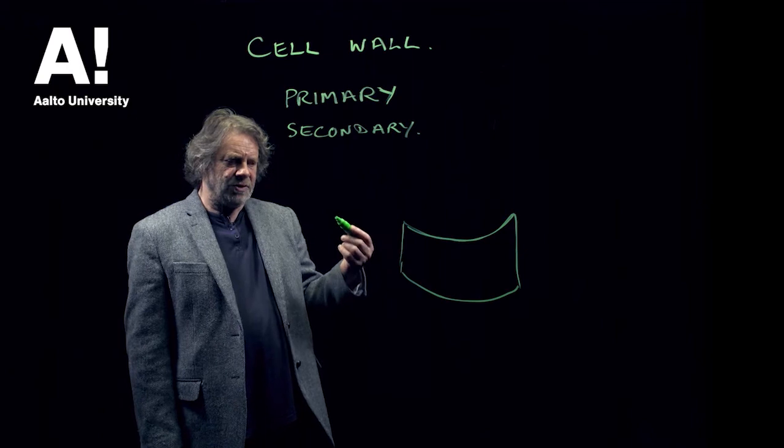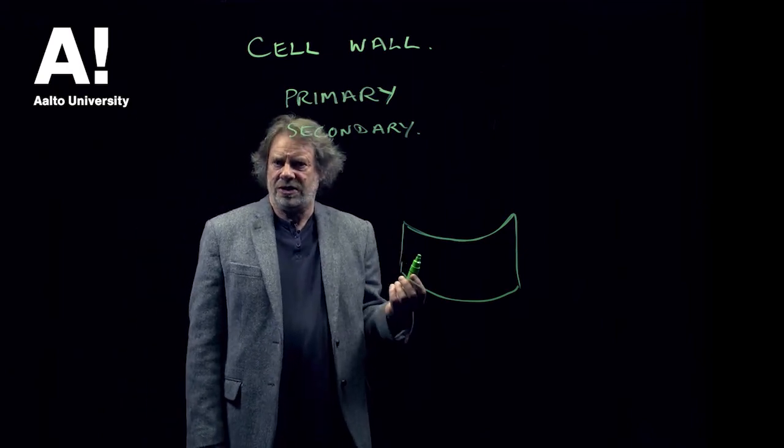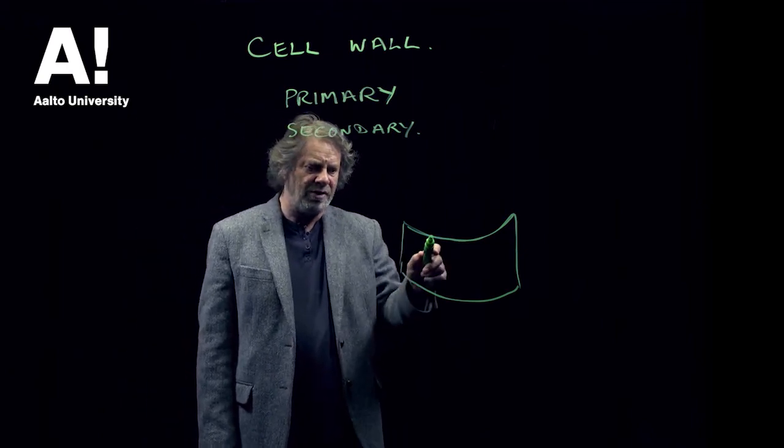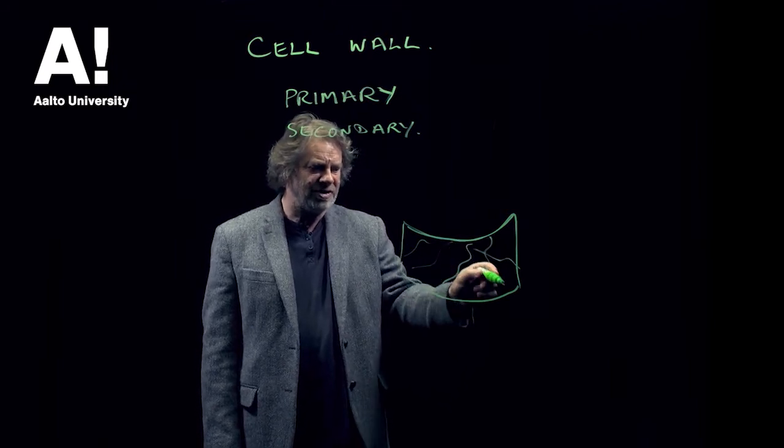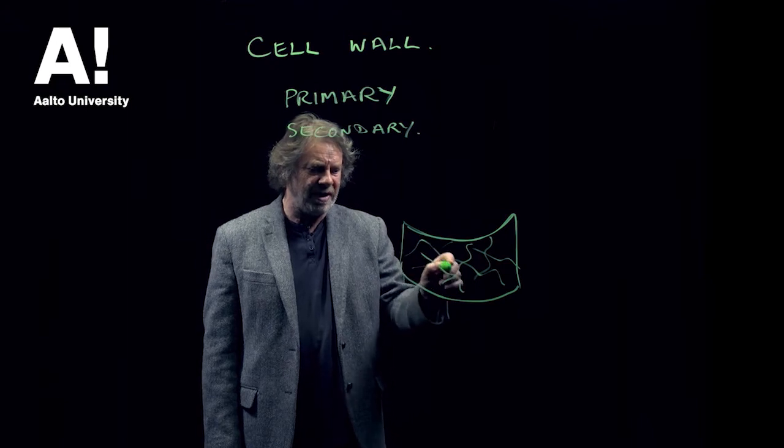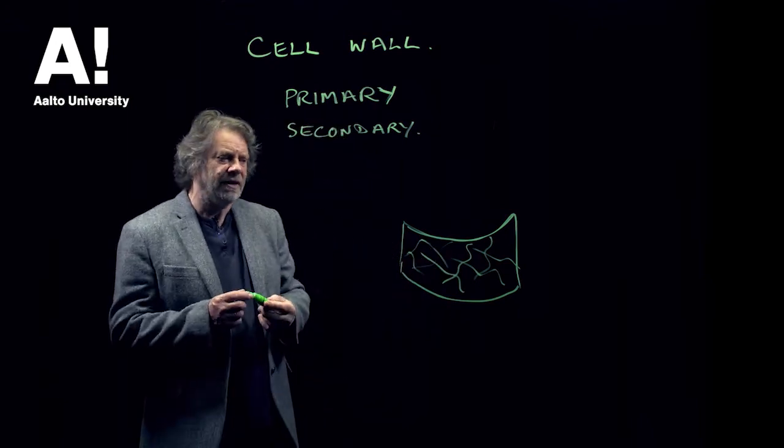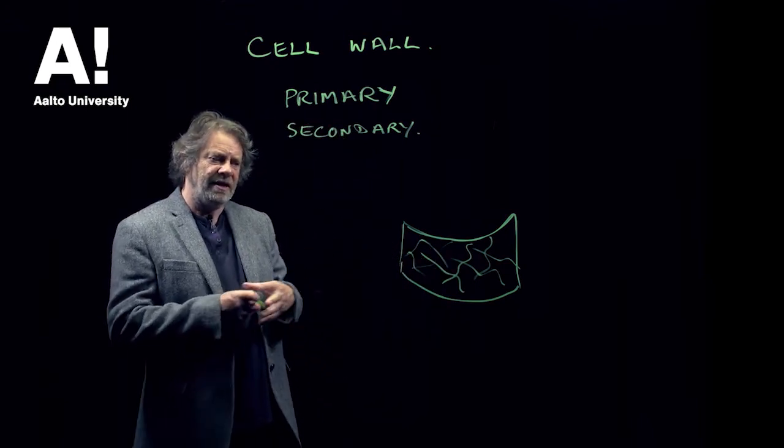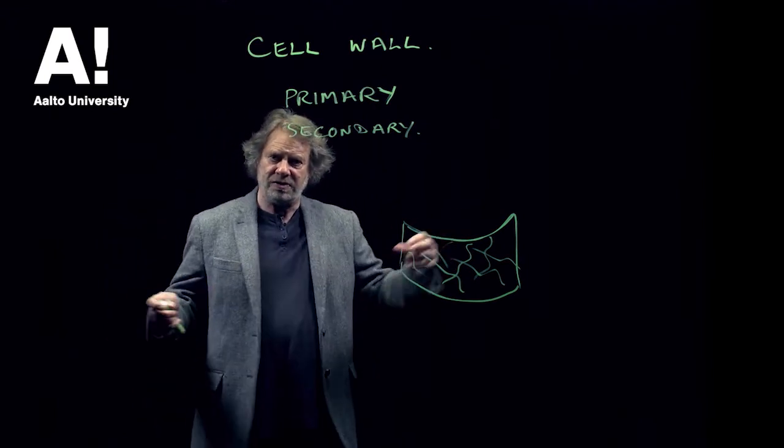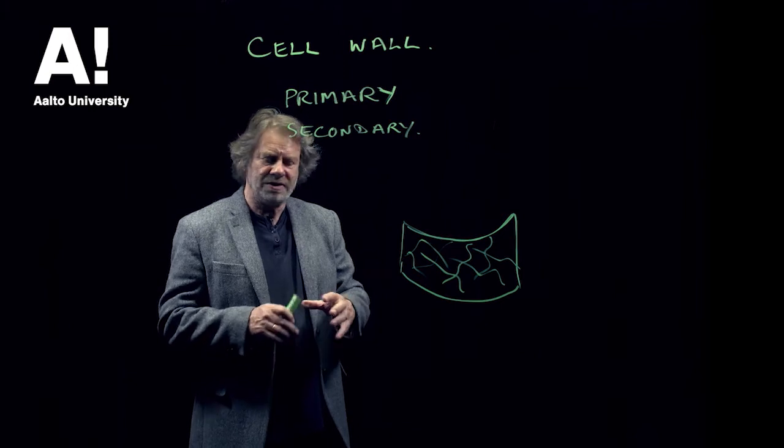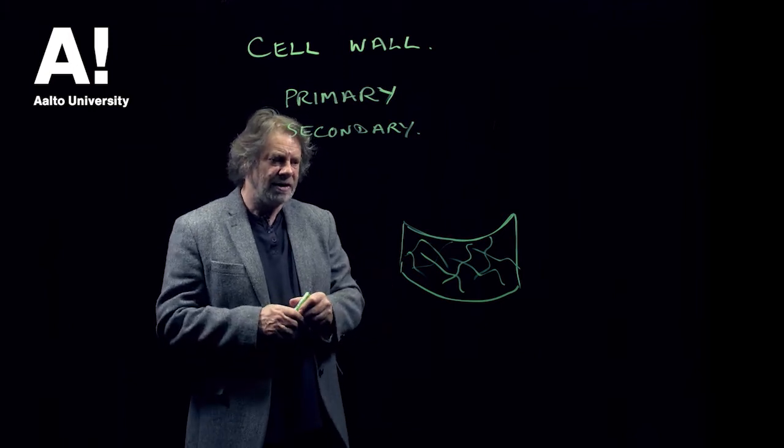The main difference between these layers is in the structure that the microfibrils have. The primary layer has got a very loose assembly of microfibrils which have a sort of a criss-cross pattern, but I don't think there's anything regular to it. And this layer is basically designed to be very flexible, to allow the cell to expand longitudinally and to expand sideways as the cell is growing.